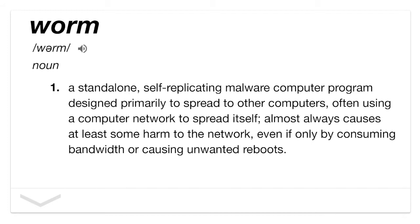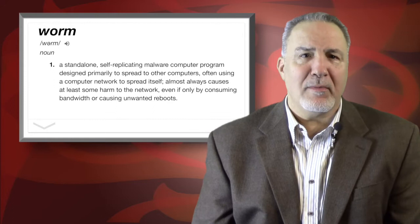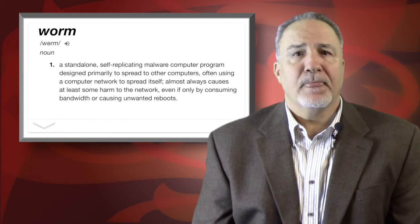At an organization's email endpoints, it appeared as an email with an unknown file attached and was let in by the many firms utilizing a default allow security posture for new unknown files. When the user downloads the attachment and executes it, the worm creates a new email message with a copy of itself attached and mails itself to one or more email addresses.